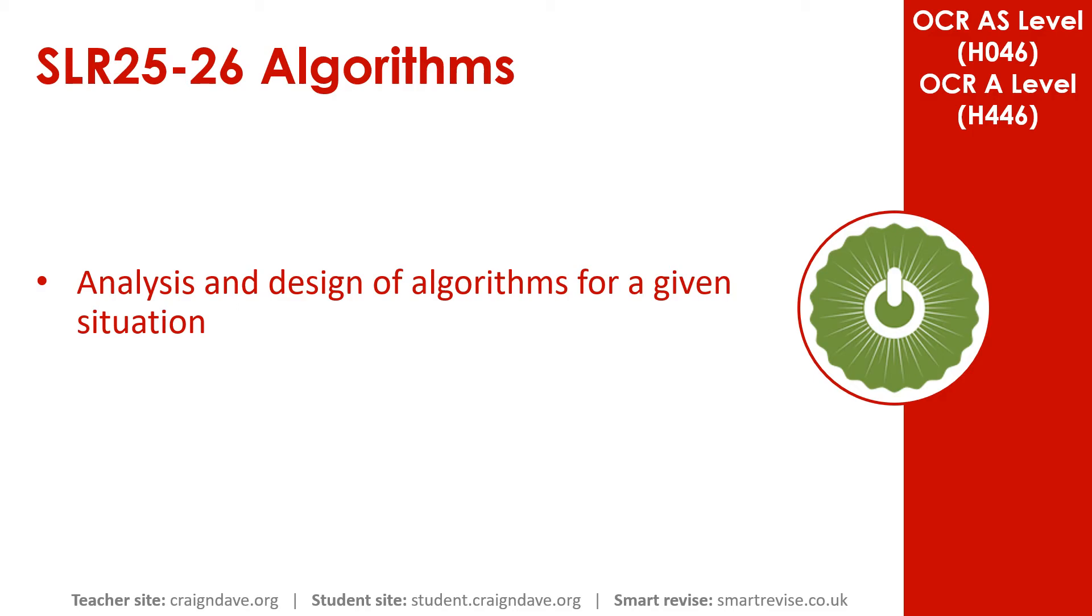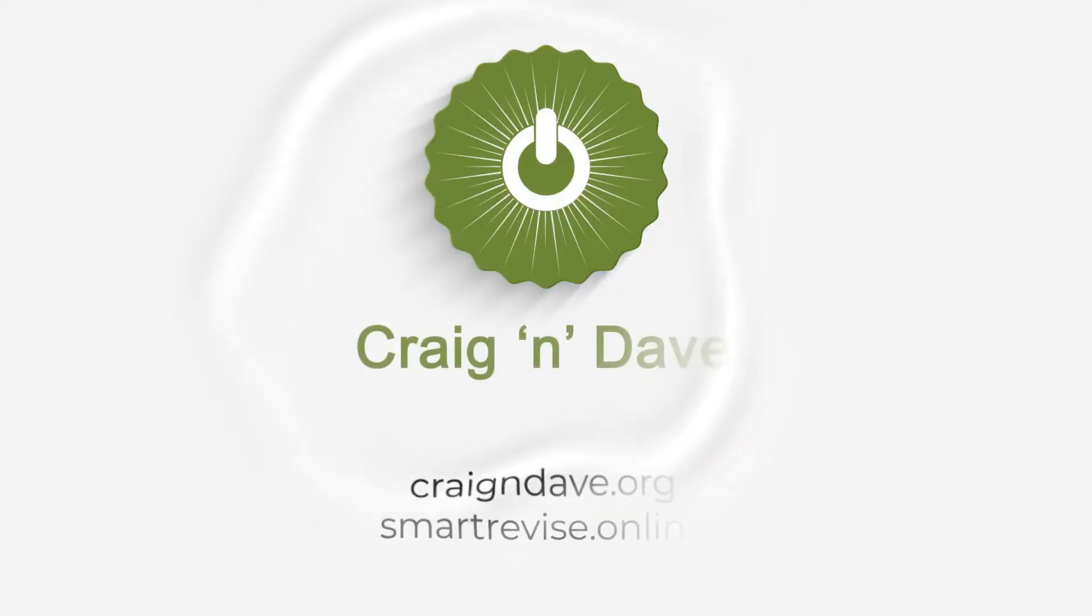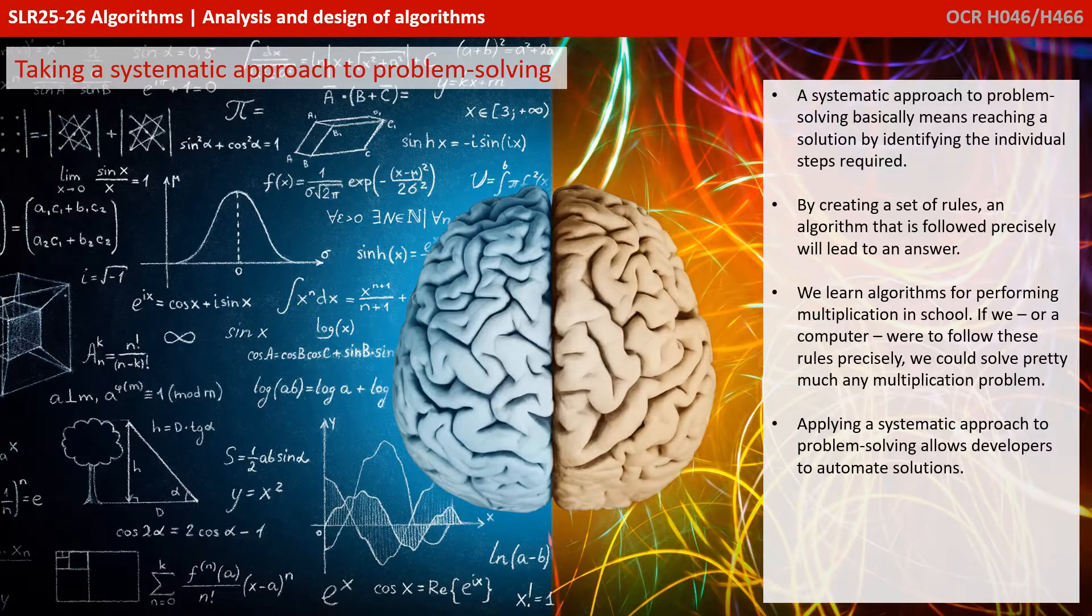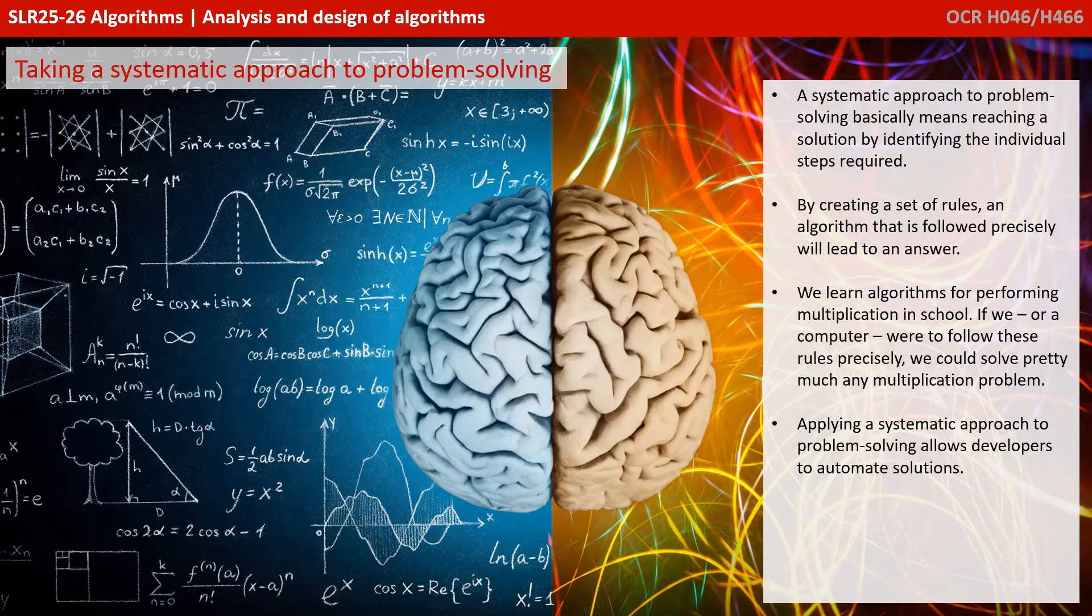In this video, we're going to take a look at the analysis and design of algorithms for a given situation. So what do we actually mean when we talk about a systematic approach to problem solving? Simply this is all about getting to a solution by identifying the individual steps needed. And there's a number of ways and skills of doing this, which we're going to look at during this video.